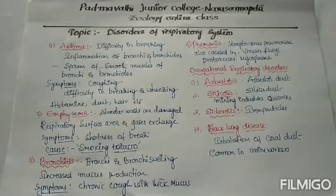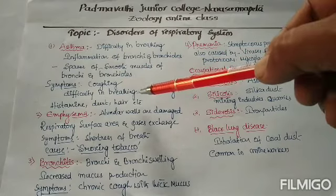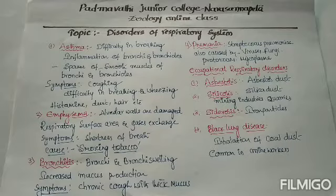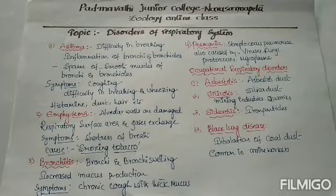Symptoms of asthma include difficulty in breathing and wheezing — a whistling sound during respiration. Asthma is difficulty in breathing caused due to the inflammation of bronchi and bronchioles, characterized by the spasm of smooth muscles present in the walls of bronchi and bronchioles.